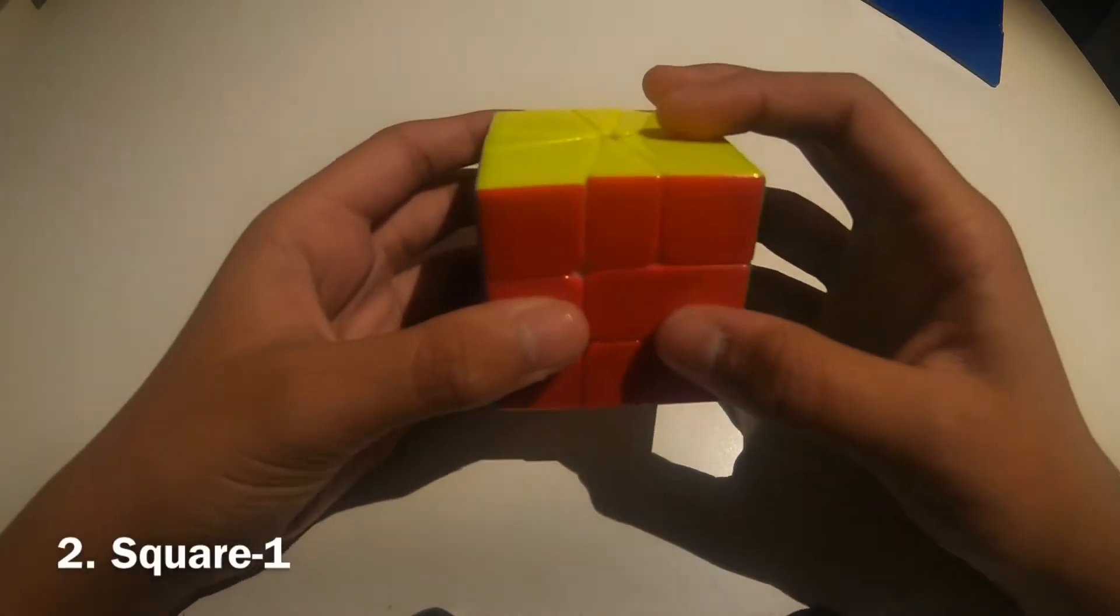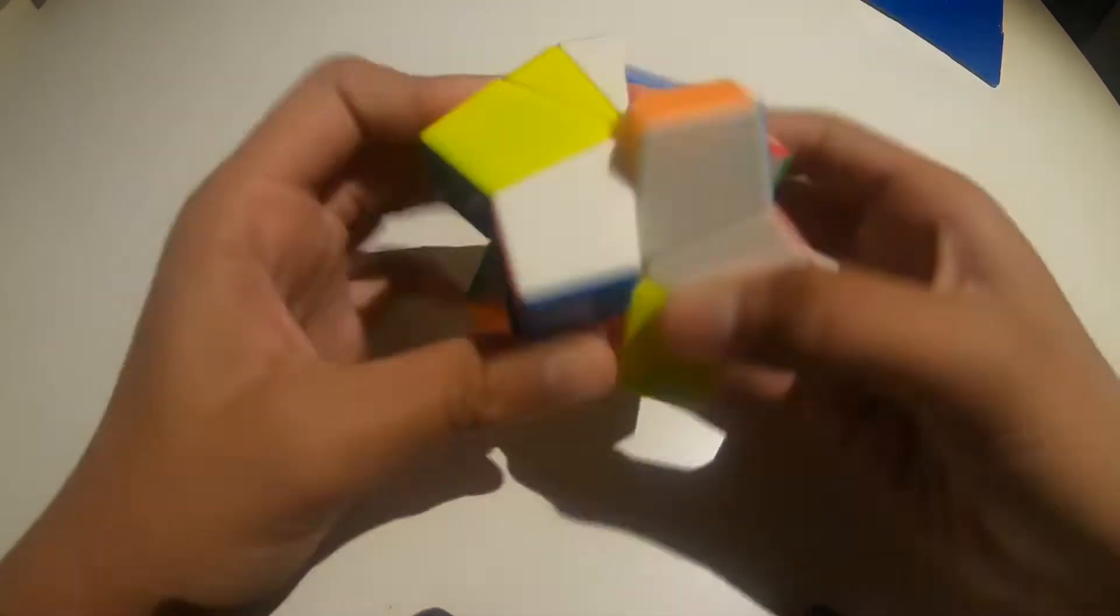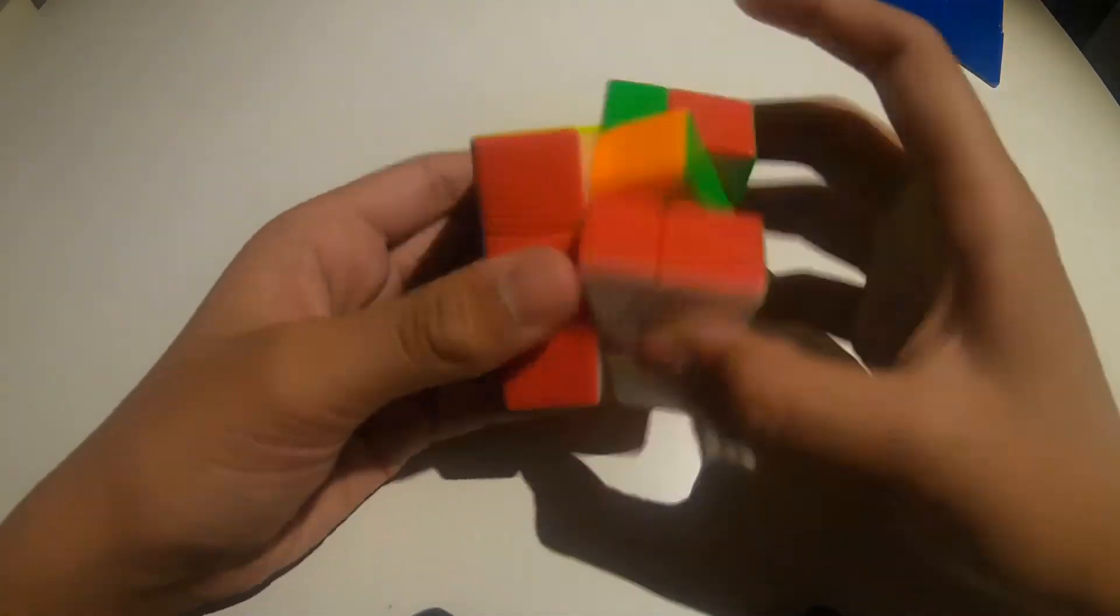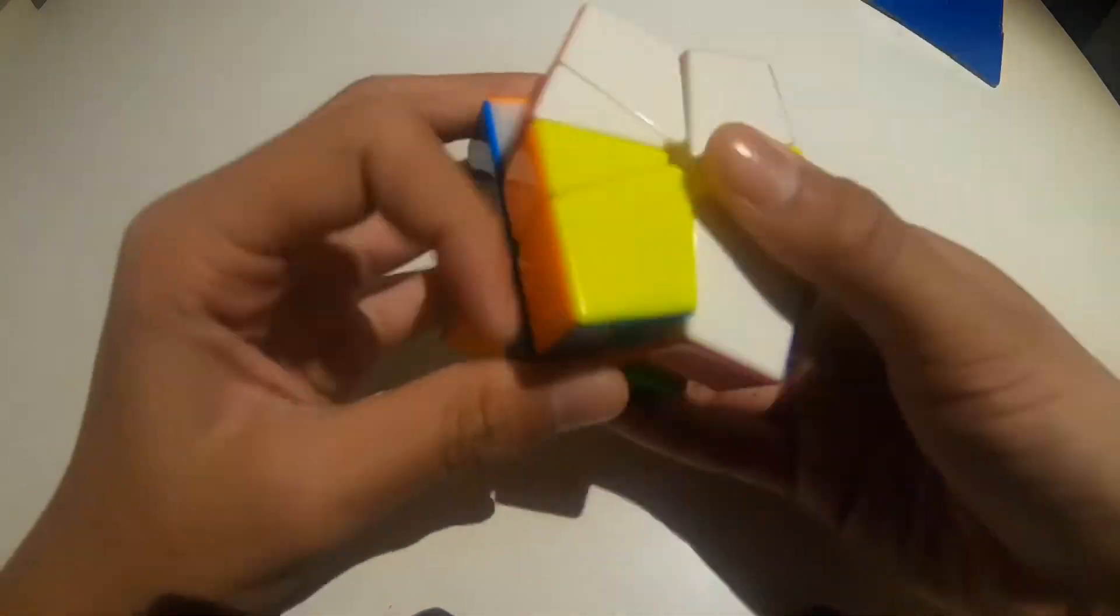Okay. In number two, we have quite a mainstream puzzle, or WCA event I should say. It is the Square One. So I actually solved this on my own, without using some sort of pamphlet or looking up a tutorial.